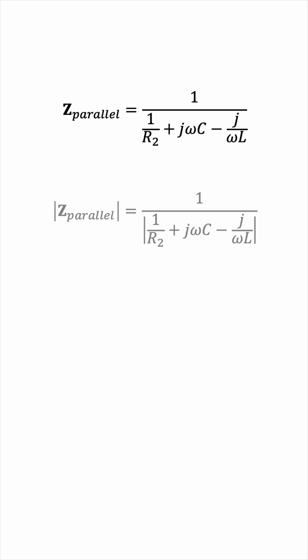This is a complex number and the magnitude of the complex number is the magnitude of the top divided by the magnitude of the bottom. The magnitude of 1 is just 1, so we're only left with the magnitude of the denominator, like this.